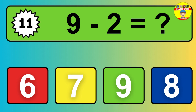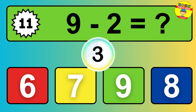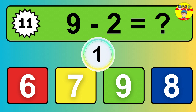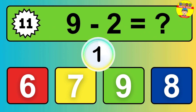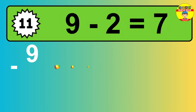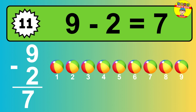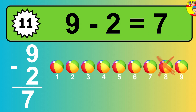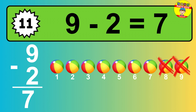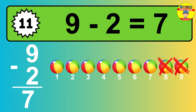Question 11: 9 minus 2 equals what? The answer is, 9 minus 2 is 7. Let's count it: 1, 2, 3, 4, 5, 6, 7.